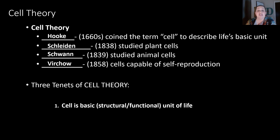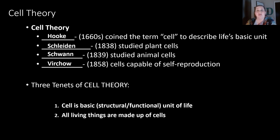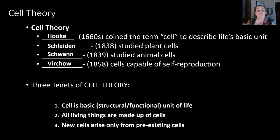The first tenet says that the cell is the basic unit of life — structurally and functionally. This means all living things are going to be made up of cells, or at least one cell. In order to be considered living, you have to have at least one cell. The last part of the cell theory says that new cells are going to arise only from pre-existing cells. Those are the three tenets of the cell theory.